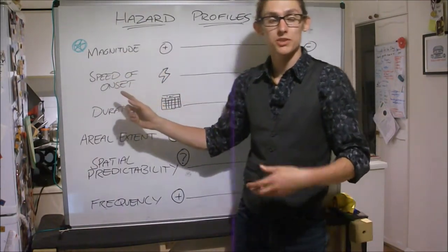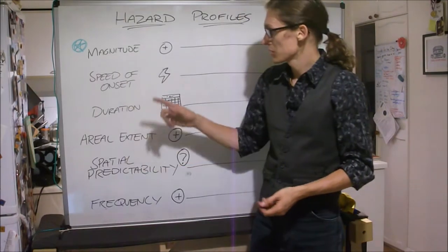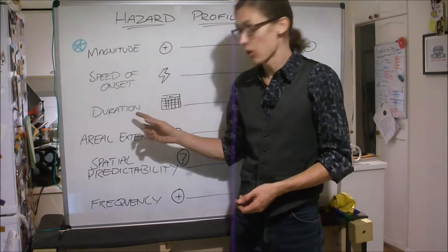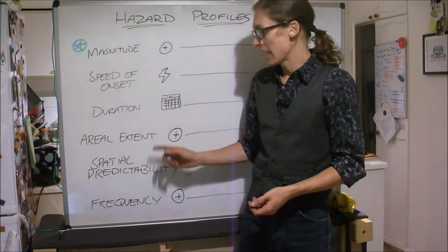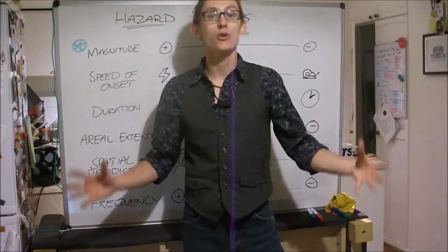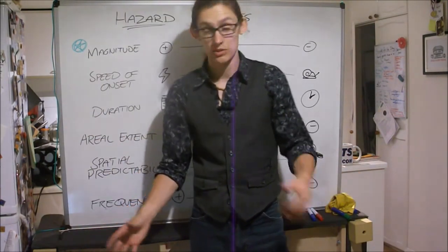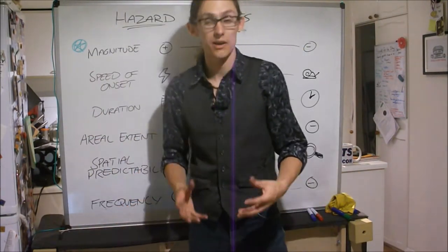So when we're looking at a hazard profile, we're looking at six key factors. Magnitude, speed of onset, so how quickly it comes about. Duration, how long. Aerial extent, how big an area is being affected. So the extent of an area being affected.